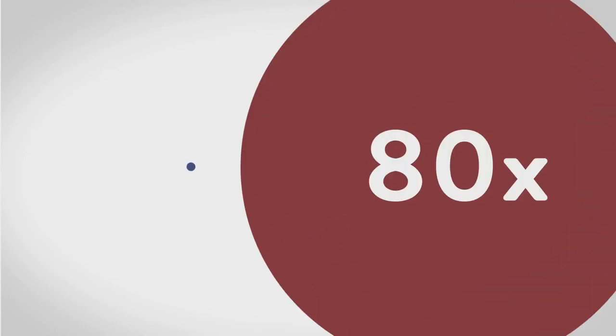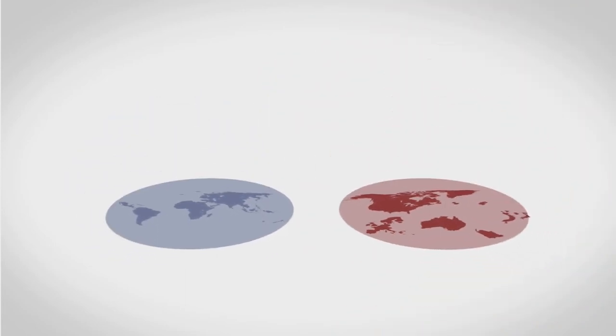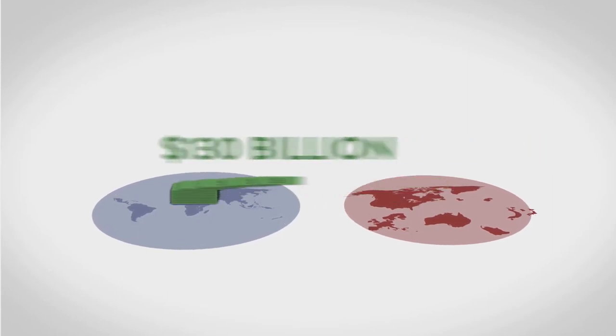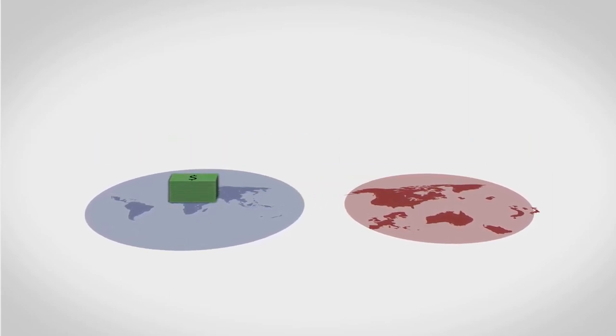Today, they're about 80 times richer. Rich countries try to compensate for this by giving aid to poor countries, about $130 billion each year. That's a lot of money. So then why does the wealth gap keep getting bigger?